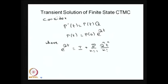If the CTMC has a finite state space, I can also use the exponential matrix to get the time-dependent solution. Starting with the forward equation, the solution is going to be P(t) = P(0) × e^(Qt).